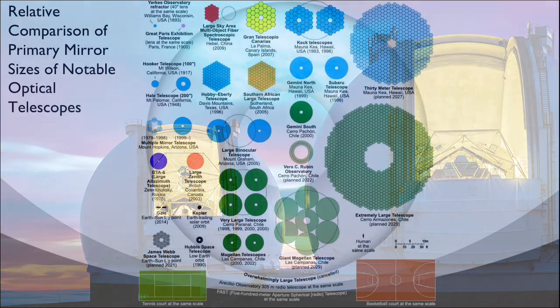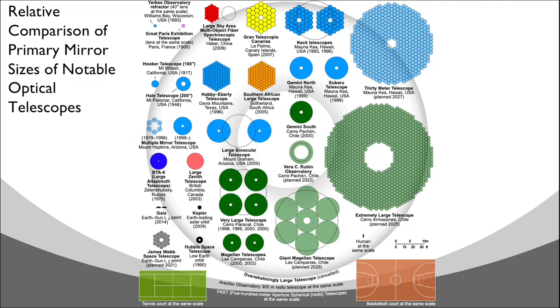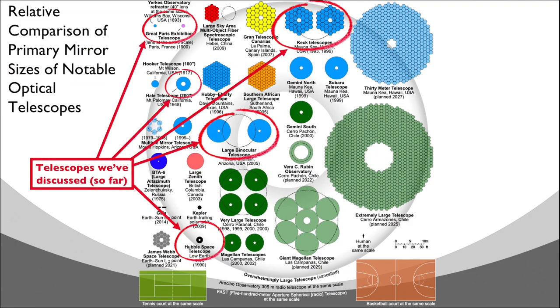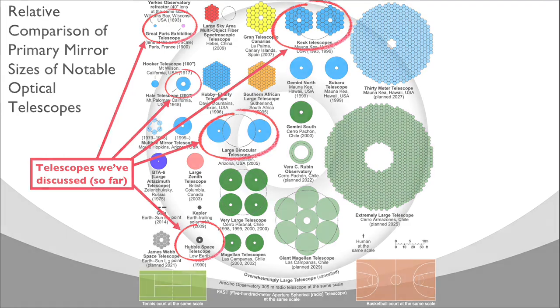This diagram shows the relative sizes of the primary mirrors of notable optical telescopes. We already discussed the Yerkes Telescope, the Great Paris Exhibition Telescope of 1900, the Hale 200-inch Telescope, the LBT, the Twin Keck Telescopes, and of course the Hubble. Some of the other telescopes included in this diagram are either currently under construction or proposed for future projects.